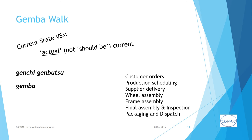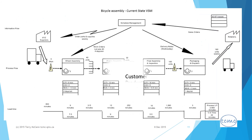In our example, we find the following processes: customer order processing, production scheduling and orders on suppliers, supplier delivery, front and back wheel assembly, frame assembly, final assembly and inspection, and packaging and dispatch. In the current state VSM, the cycle starts with the retailer placing an order; production planning orders components and schedules production; suppliers deliver; and bicycles are assembled starting with wheel assembly, through frame assembly, final assembly and inspection, finishing with packaging and dispatch of finished articles to retail customers.